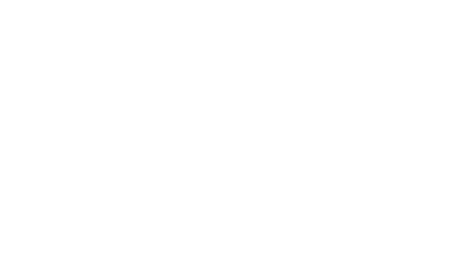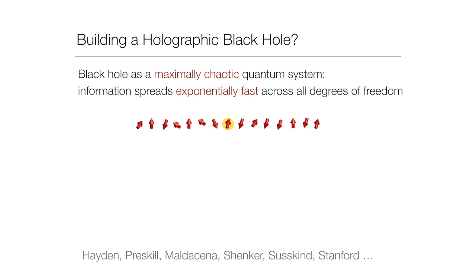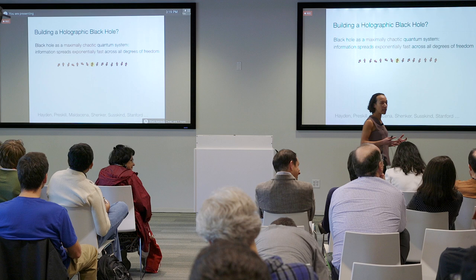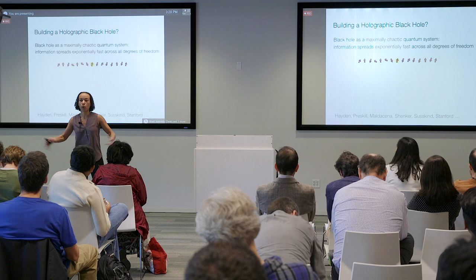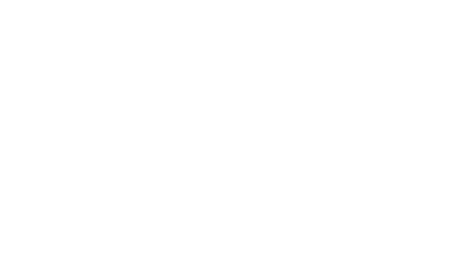Those are the dreams. If we'd like to start with something that has a simple description on the gravity side, what could be simpler than a black hole? As a starting point, we might aspire to build a black hole in the lab. A black hole I'm told should be thought of as a maximally chaotic quantum many-body system, where the key signature is that if you encode information in one qubit, it would exponentially quickly become delocalized over all degrees of freedom — it would be a fast scrambler. This is a nice concrete prediction one ought to be able to test in experiments to check: is this thing we have in the lab a black hole?